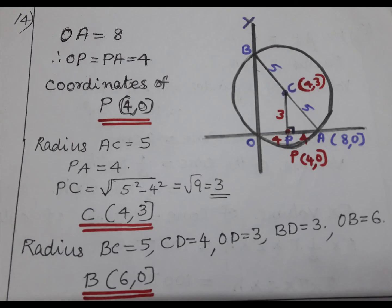The answer is radius 5, OA equals 8. OP equals PA. P1 is midpoint. 8 divided by 2 is 4. P point coordinates (4,0).